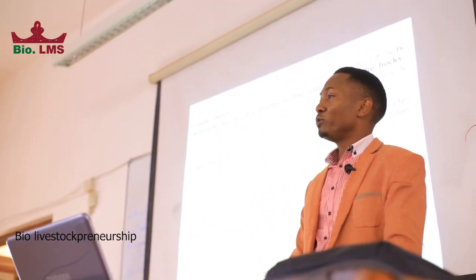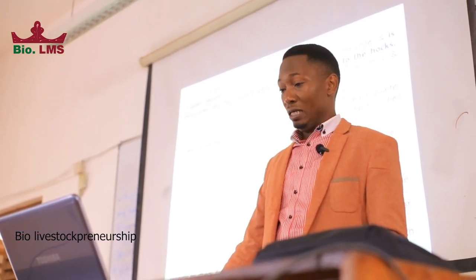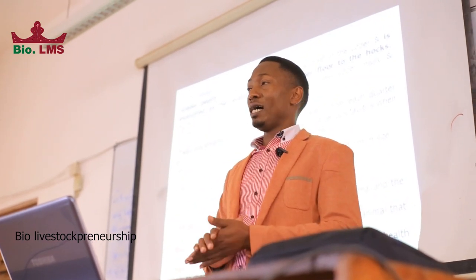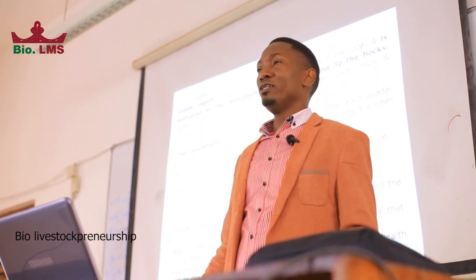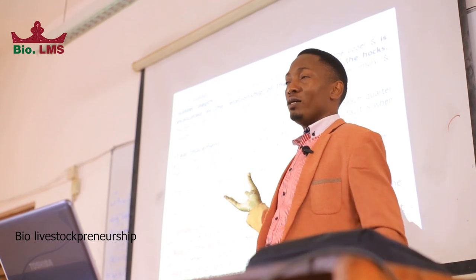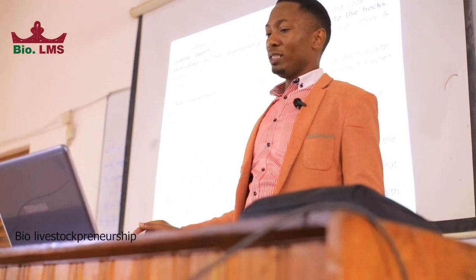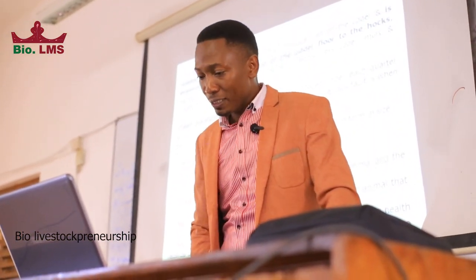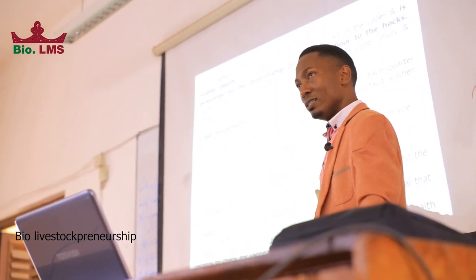The udder is a very important structure of the animal — it is the factory. When scoring animals, the udder itself has a score of 40%, the highest of all factors evaluated. The udder is the most important structure on the body because it produces the milk that gives you money on a daily basis. Look at udder depth, teat placement, and in addition, the temperament of the animal is very important because it affects milk secretion — the animal should be docile and friendly.